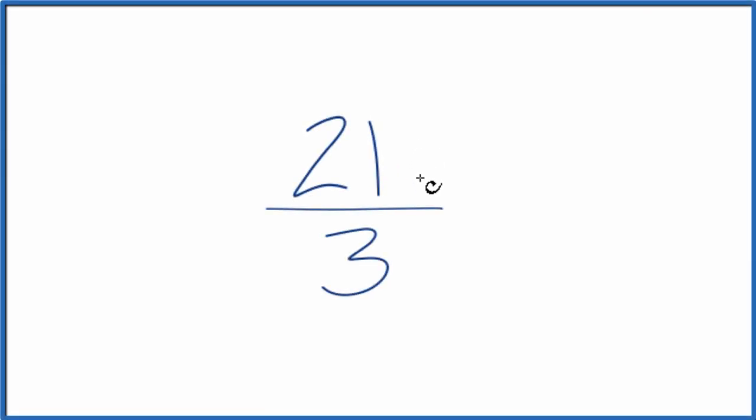If you're asked how to simplify this fraction, 21 thirds, here's how you do it. We want to find another fraction that's equivalent, equal to 21 over 3, just that we've simplified it or reduced it to lowest terms.